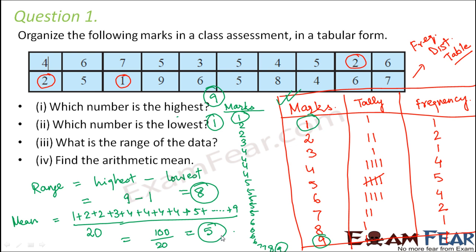So what does that mean? It means that if we assume all students in the class got equal marks, then each student got 5 marks. This is how we can organize data and calculate the arithmetic mean.